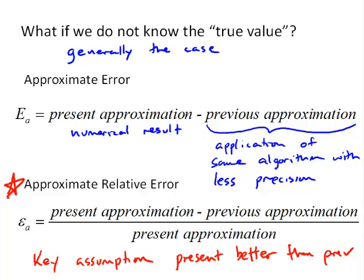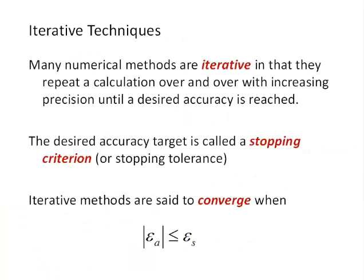And this brings us to one of our main uses of approximate relative error, and that's in iterative techniques. For iterative numerical techniques, what we do is repeat a calculation over and over with increasing precision until we reach a desired accuracy. That desired accuracy target is called a stopping criterion, or stopping tolerance. We usually would denote that by epsilon s. So we can say an iterative method converges when we've repeated that calculation to the point that the absolute value of the approximate relative error is less than or equal to the stopping criterion.